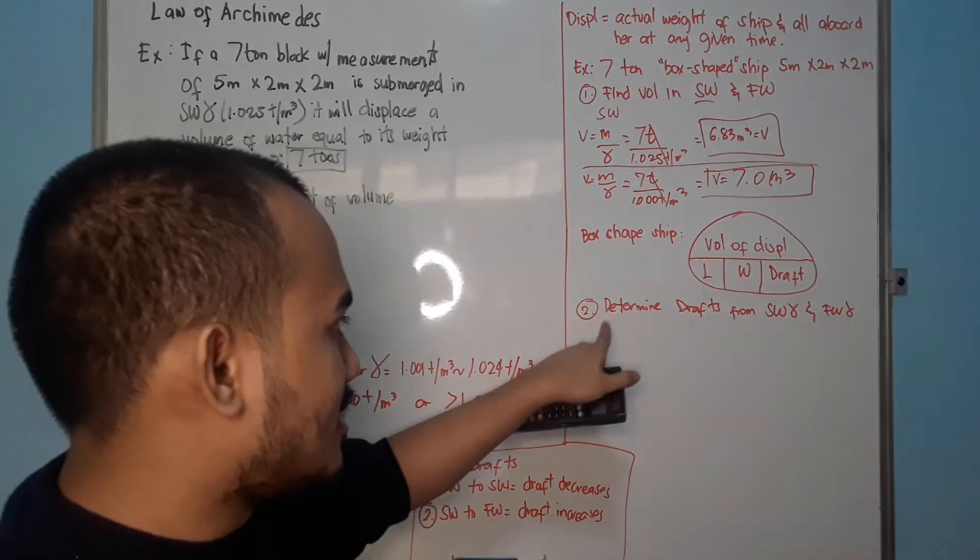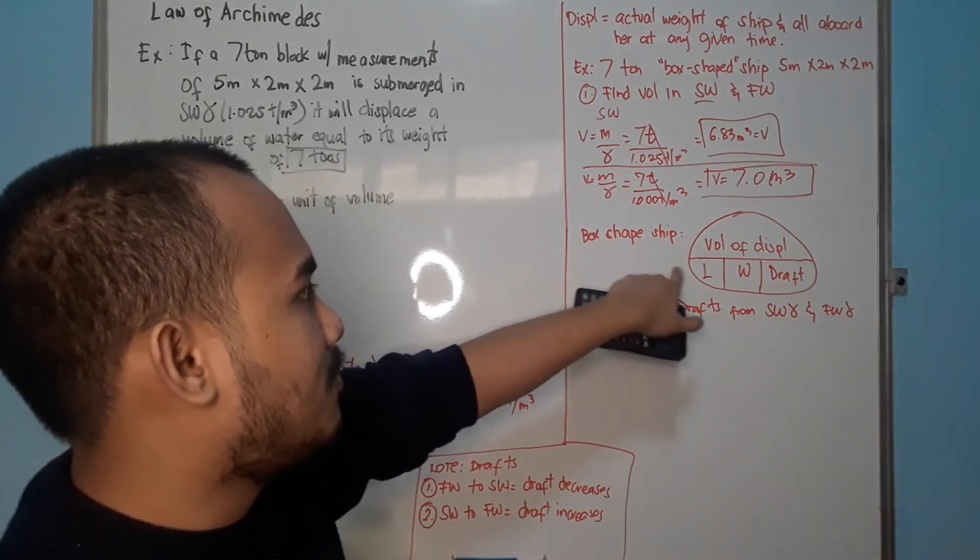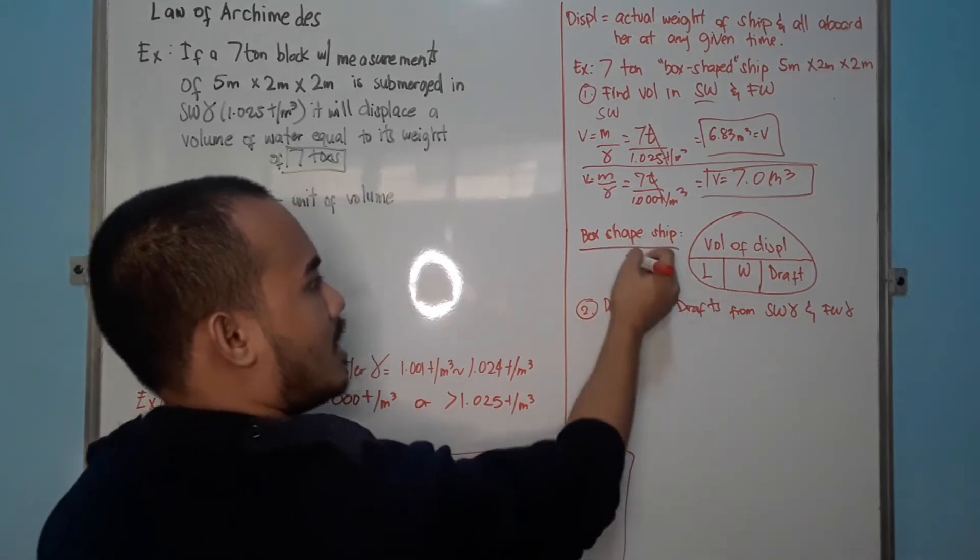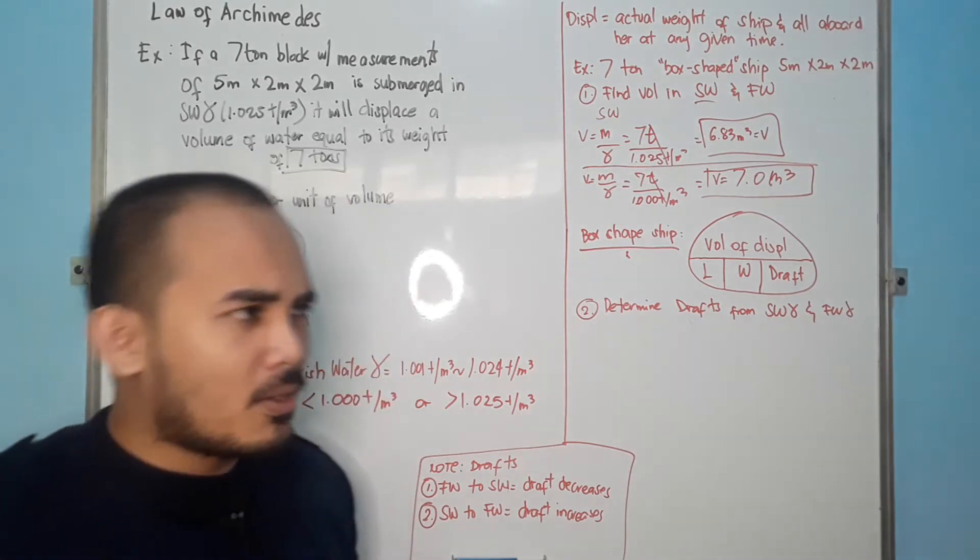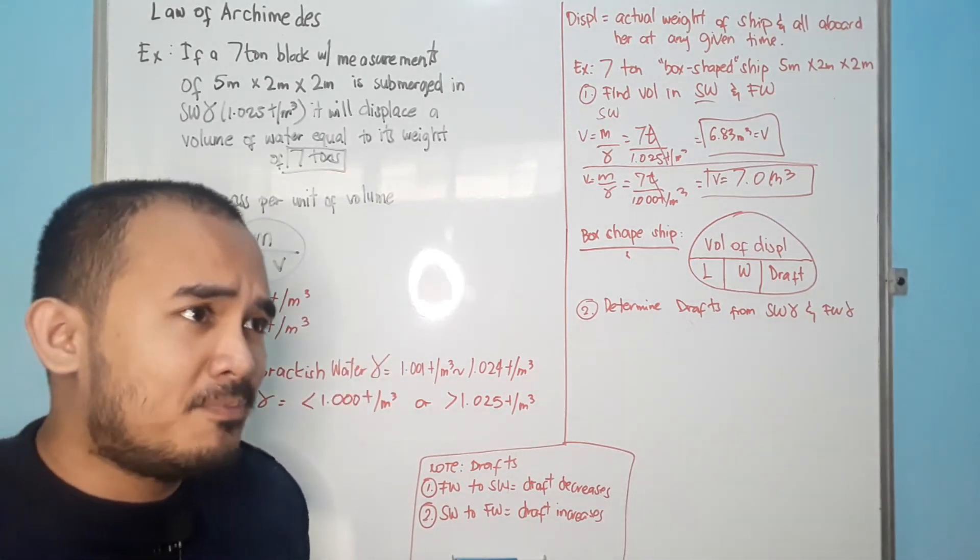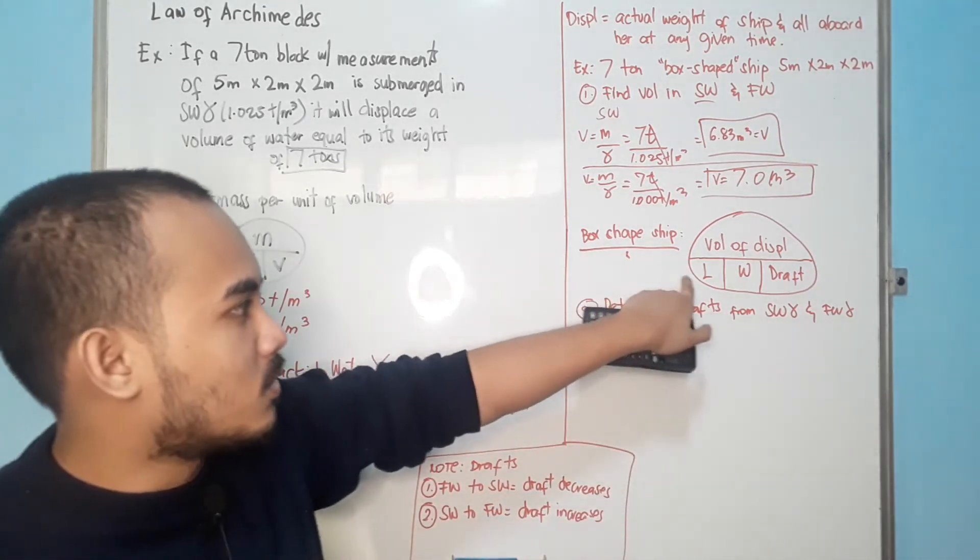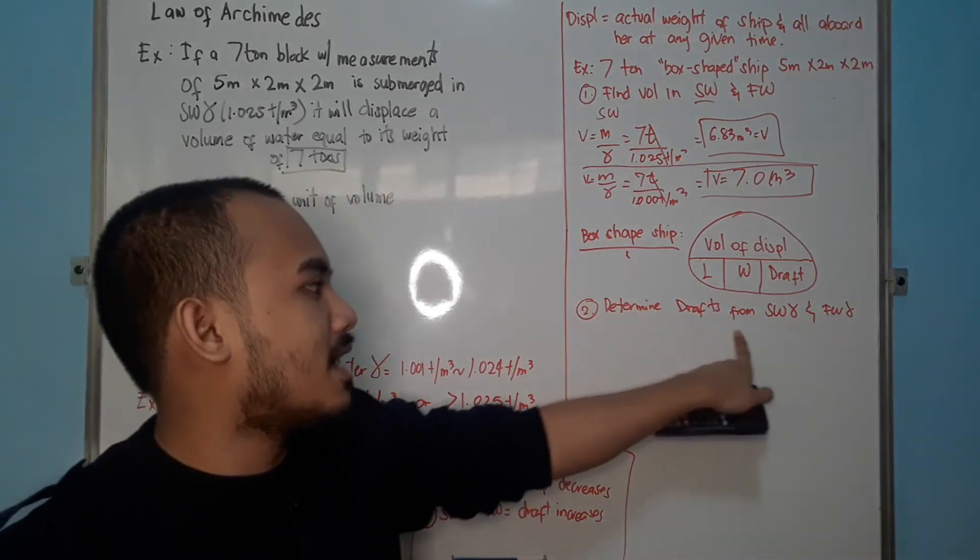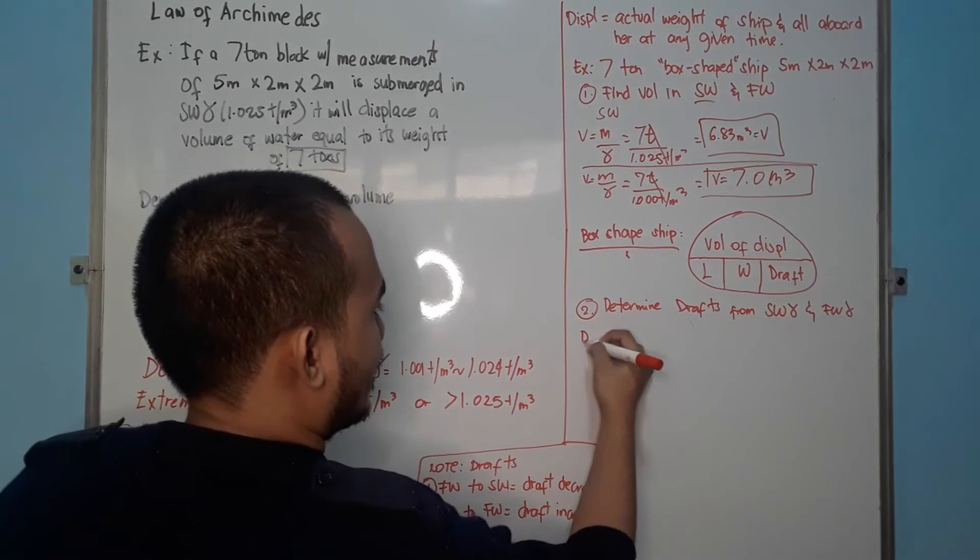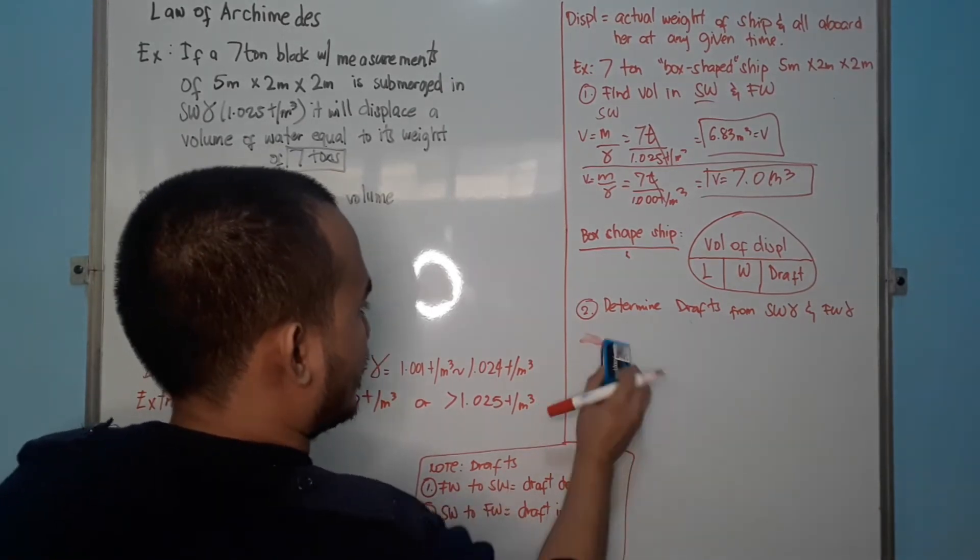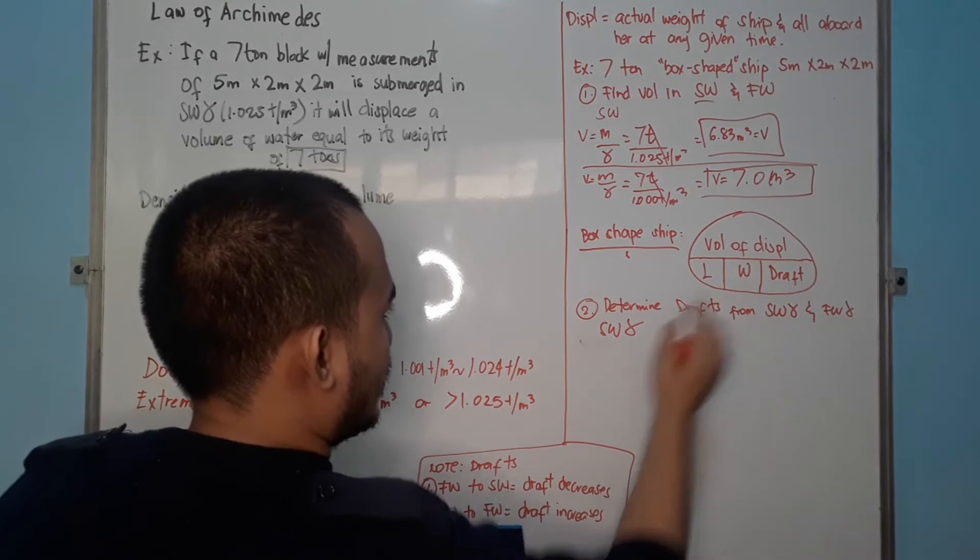On the second scenario, second question is, determine the drafts from salt water and fresh water. Again, this mnemonic circle is applicable for, again, let me just remind you, for box-shaped ships. This is not applicable for ship-shaped ships because, although, there is a difference of maybe 0.5, 0.10, but we want to be accurate as much as possible. So, again, we go to this formula. If you want to, again, number two, determine drafts for salt water and fresh water. Again, from the formula, draft.